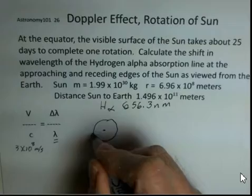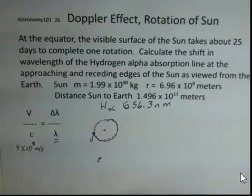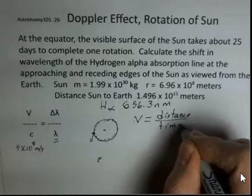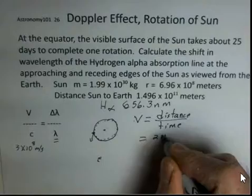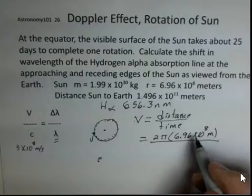If I draw a top view of this, the earth is out here and this edge is coming towards us. This material takes 25 days to make one complete trip, and we can calculate the speed as the distance traveled divided by the time. Going around a circle, we'll assume the sun is a circle. We have 2 pi times the radius. I'm going to put the radius of the sun in here, 6.96 times 10 to the eighth meters, and 2 pi r gives us circumference. The time is 25 days.